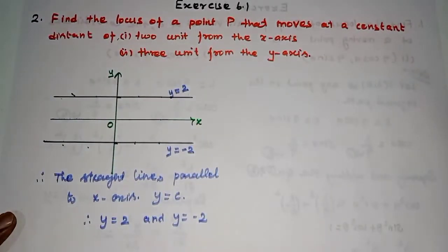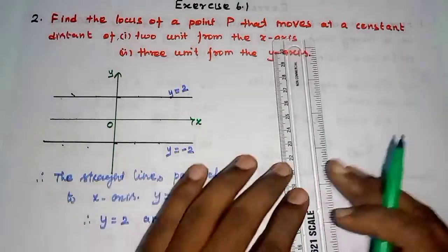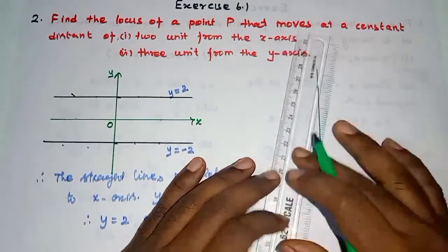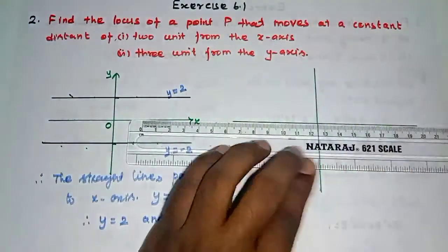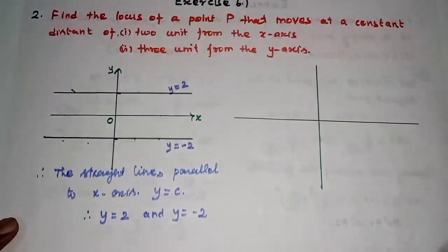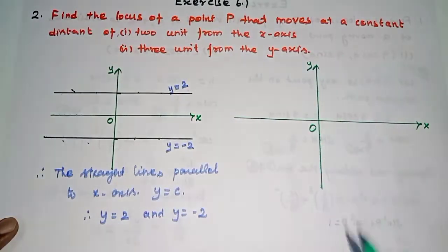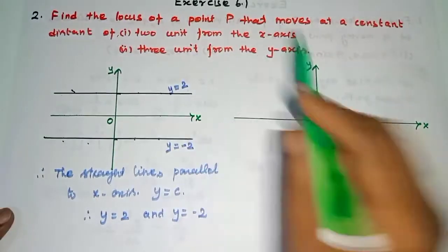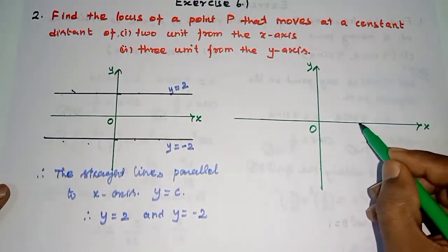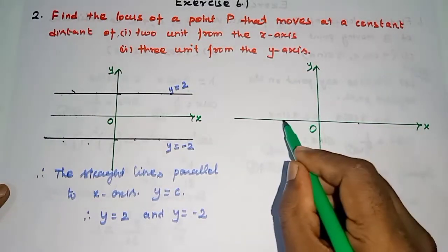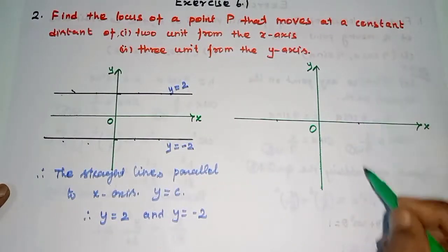Now, sub-question 2: three units from the y-axis. First, the axis — it is x, it is y, it is the origin. Three units from the y-axis: the distance to the y-axis is equal to three units. It is the right side and left side. So somewhere in the plane on the left side, this three units is constant.